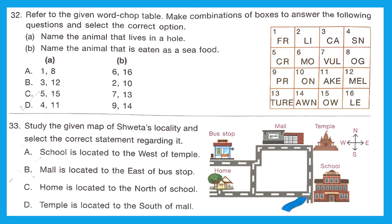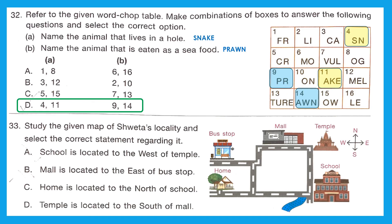Question 32: Refer to the given word grid. Make combinations of boxes to answer: name the animal that lives in a hole — most probably a snake — and name the animal eaten as seafood — prawn. Now finding the box combinations: snake can be made from boxes 4 and 11, prawn from boxes 9 and 14. The option that has A: 4, 11 and B: 9, 14 is option D. Option D is the right answer.